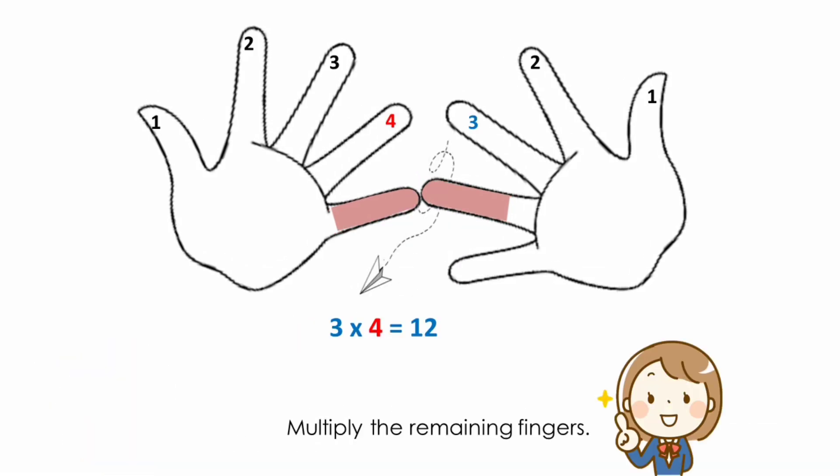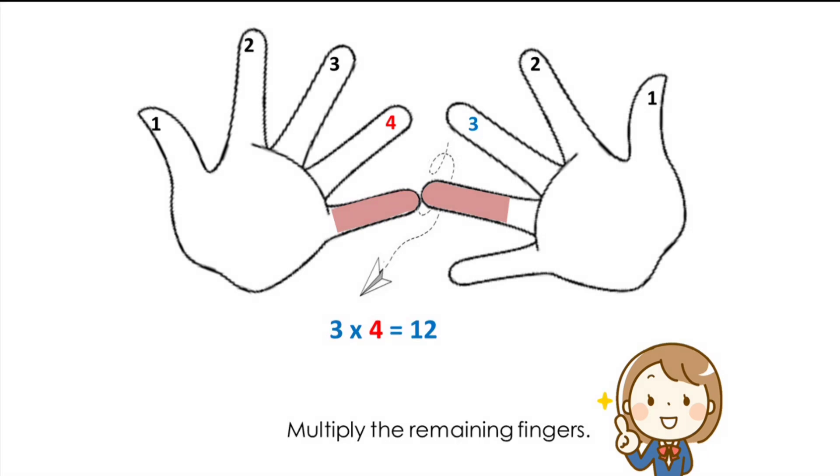Multiply the remaining fingers. The next step is to add together the number of fingers on each hand, not including the fingers that are touching. First, count the number of fingers on your left hand that are above the touching fingers. In this case, there are 4. Next, count the number of fingers on your right hand above the touching fingers. In this case, there are 3. 3 times 4 equals 12.